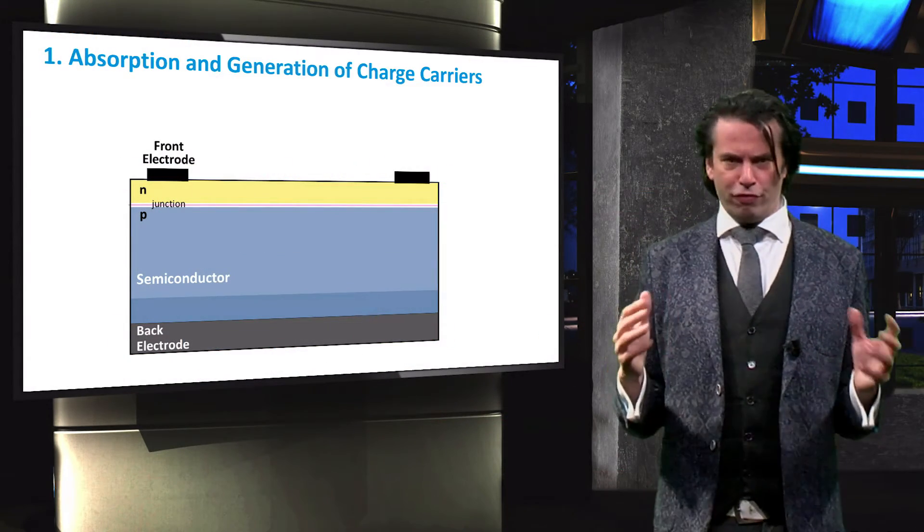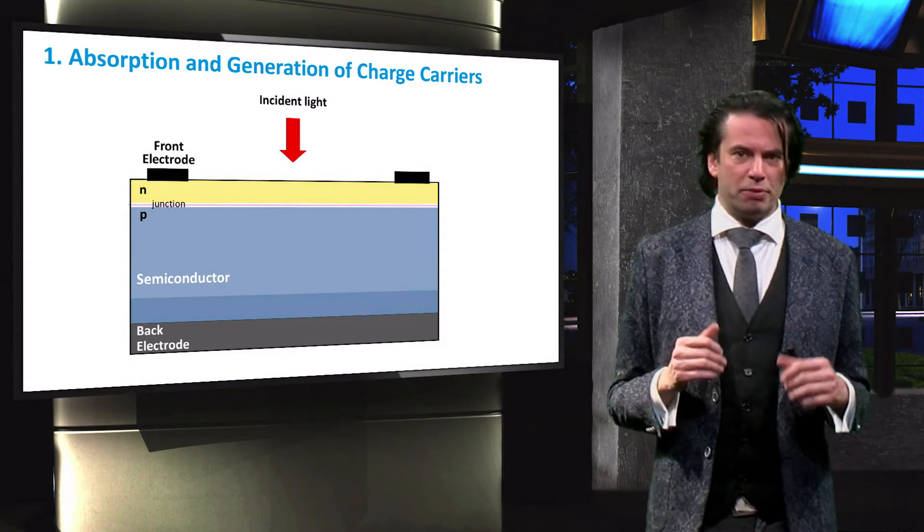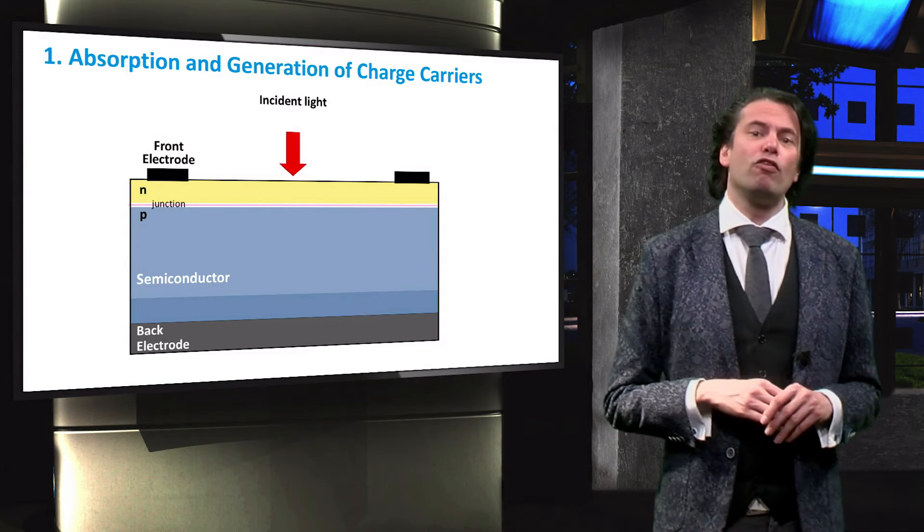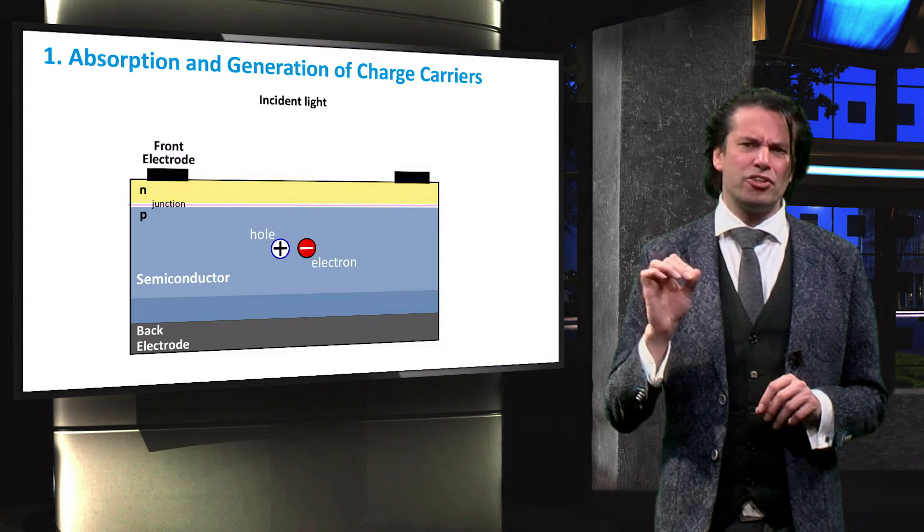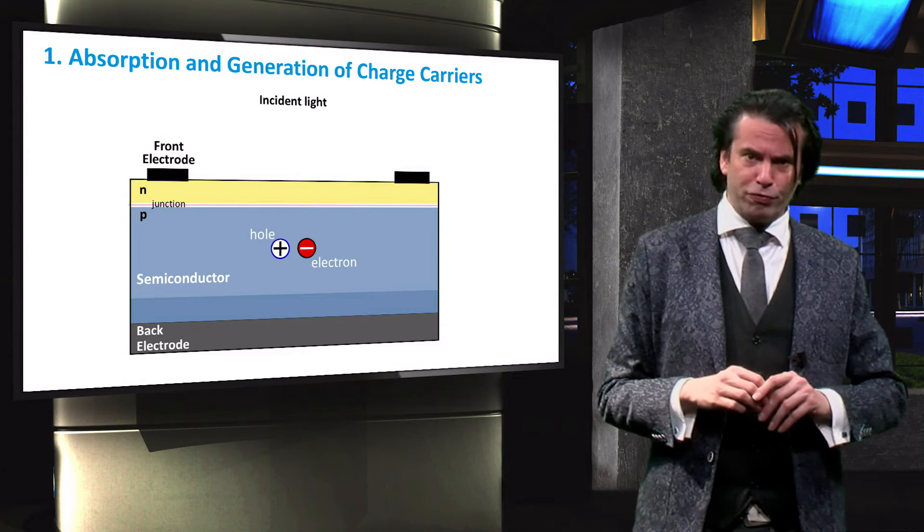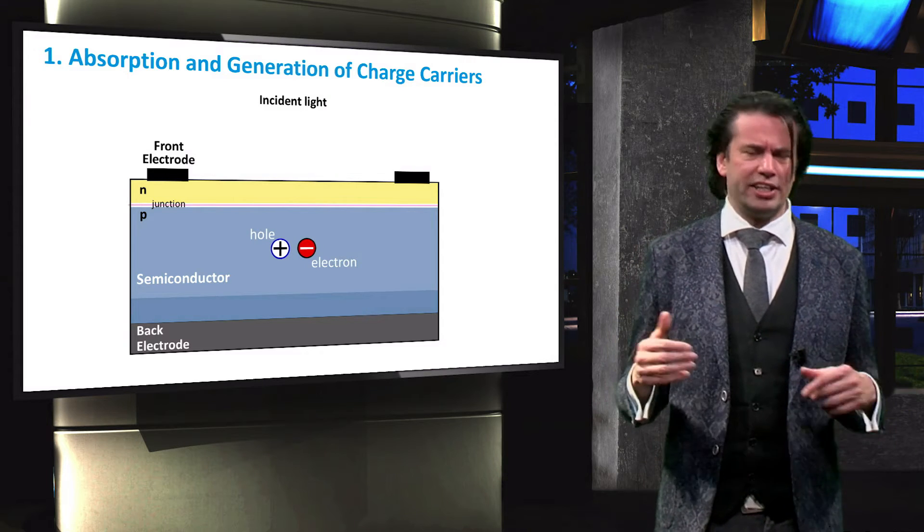The first process involves the absorption of photons in the materials that form a junction. So in here is a single photon of light incident on the solar cell. Upon absorption of the photons, an electron-hole pair is generated.